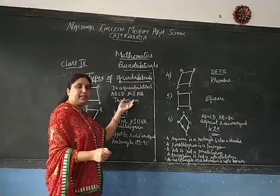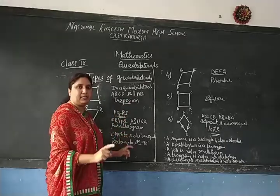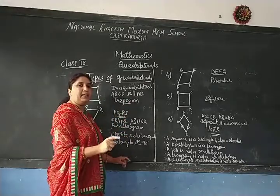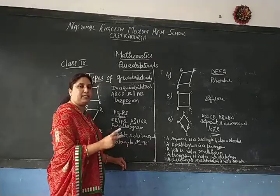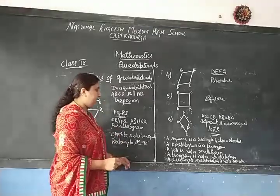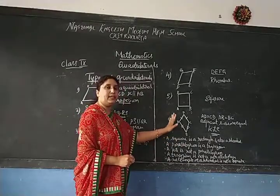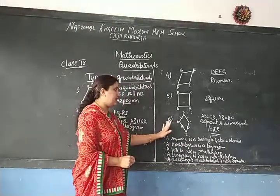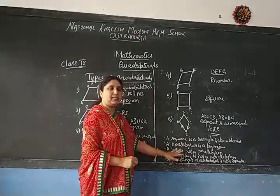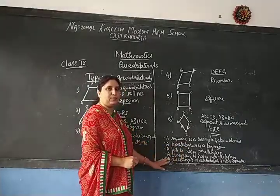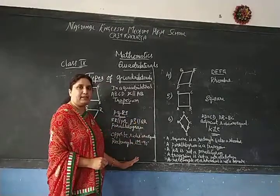Why? Because in a trapezium, only one pair of opposite sides are parallel, but in a parallelogram, both pairs of opposite sides are parallel. A kite is not a parallelogram because only adjacent sides are equal. And a rectangle or rhombus is not necessarily a square. These are the different types of quadrilaterals.